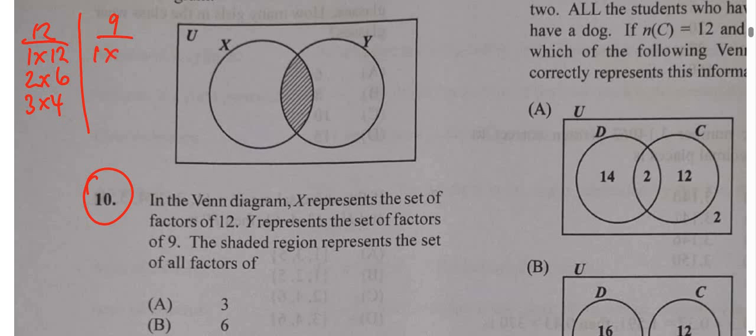Factors of 9: 1 times 9 gives us 9. And in between 1 and 9, we have 3, which is 3 times 3 gives us 9.